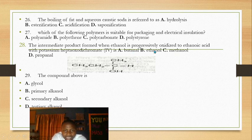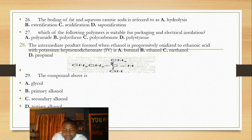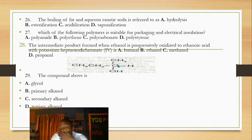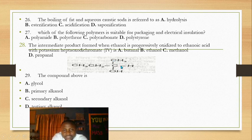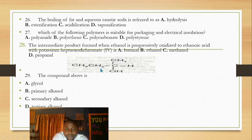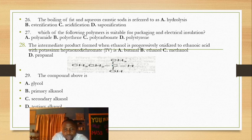Question 29: naming the organic compound. Starting from the first carbon — 1, 2, 3, 4 — the hydroxyl group is on carbon number two, so the name includes 'butan-2-ol.' It is a secondary alkanol because the carbon carrying the OH has two alkyl groups attached to it — a CH₃ and a C₂H₅. Primary alkanols have one alkyl group; secondary have two; tertiary have three.